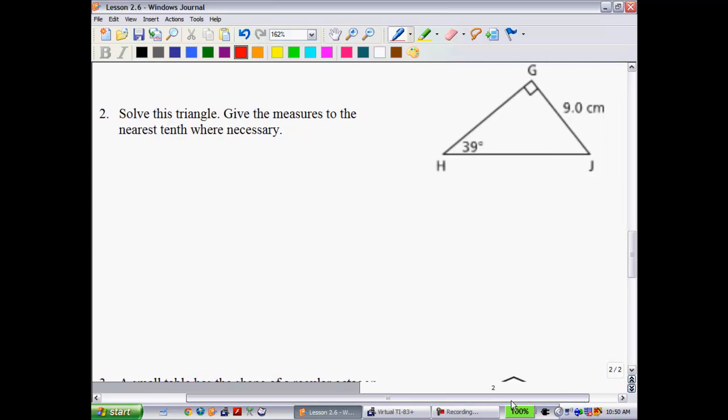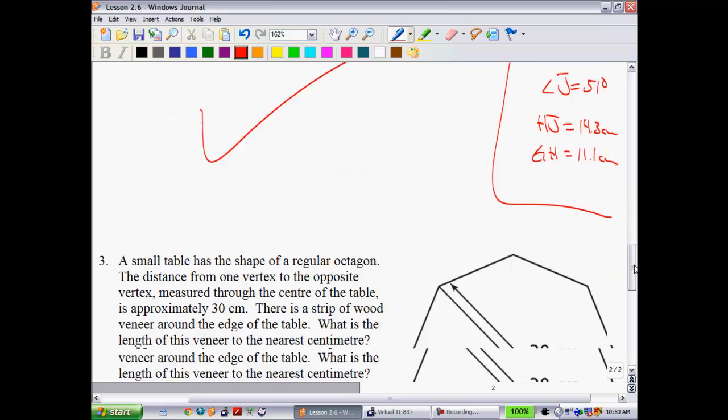Go to the next page. Solve this triangle. Give the measures to the nearest tenth where necessary. For this one, I want you to try it on your own. I'm going to force you to do this one because I'm just going to give you the final answer. I will tell you what your answers are. Angle J is going to be 51 degrees. Hj is equal to 14.3 centimeters and Gh is equal to 11.1 centimeters. Those are the solutions. You can go ahead and give that a try on your own.